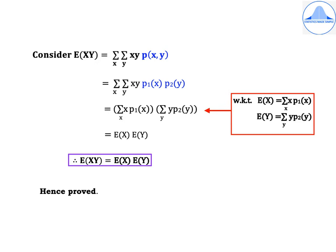Consider E(xy). This equals a double summation over x and y. Whatever is next to the expectation comes after the summation signs in small letters, so we have x·y times the joint probability p(x, y). Because the random variables are independent, p(x, y) = p1(x)·p2(y), highlighted in blue. So in the second step we get a double summation over x and y of x·y·p1(x)·p2(y).